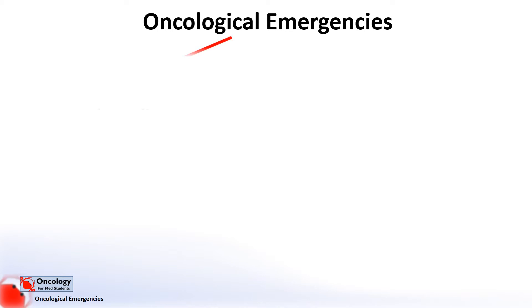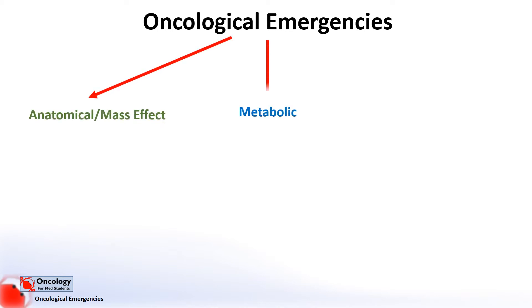I've chosen to divide them into emergencies caused by mass effects of the tumour or tumours, metabolic or hormonal effects, and treatment-related effects. Others will prefer to think of them within body systems, for instance cardiovascular, respiratory, hematological, endocrine, etc.